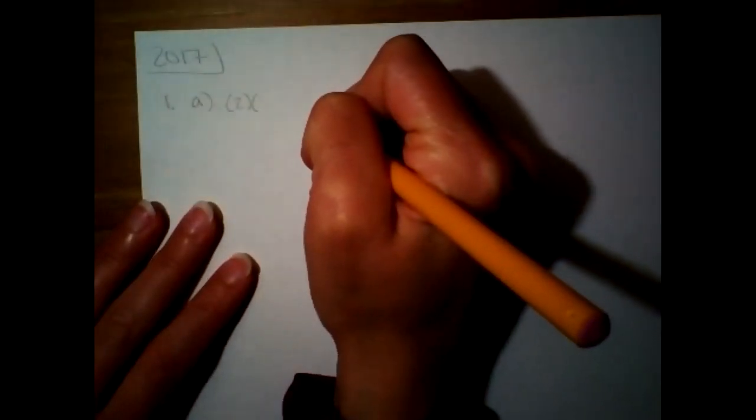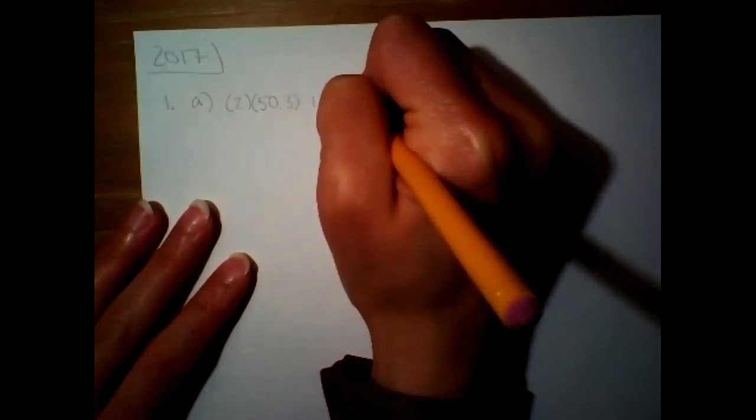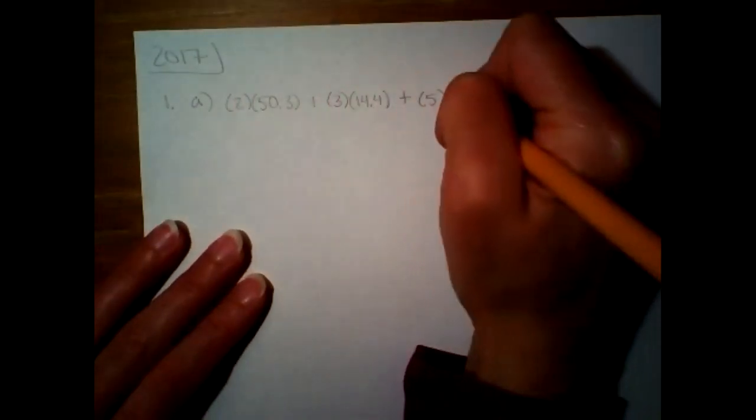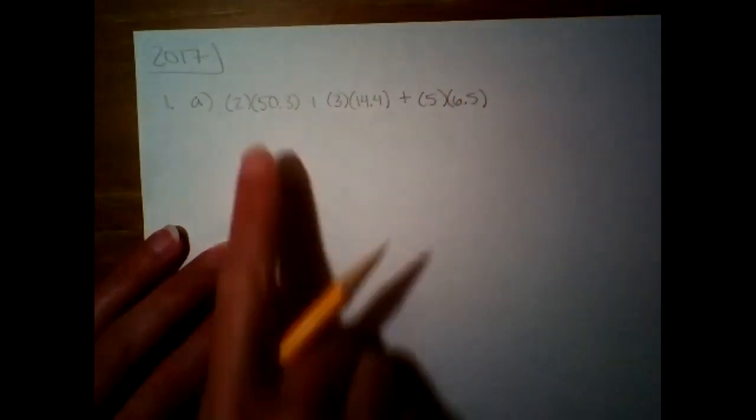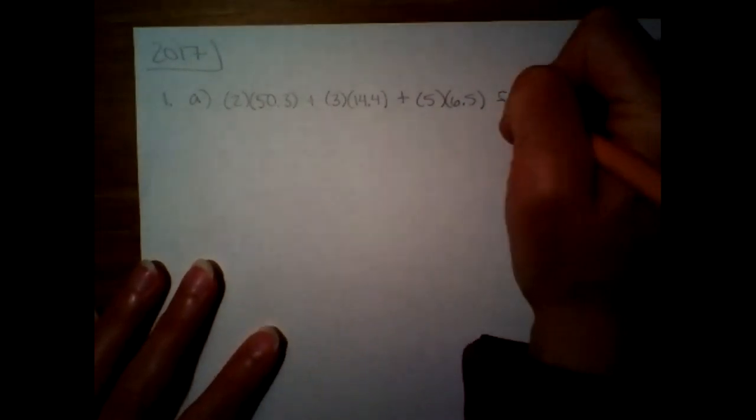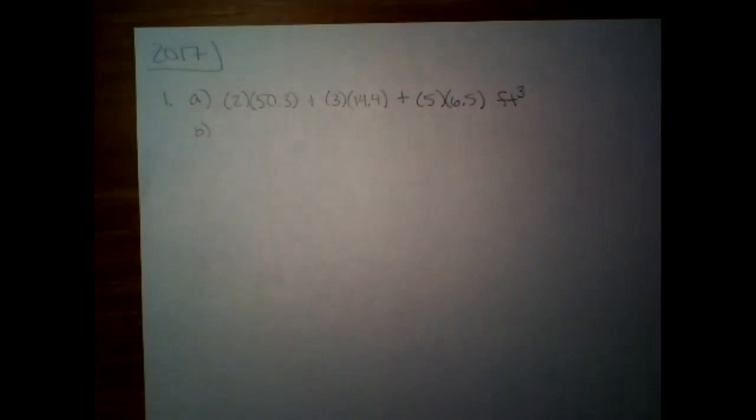So letter A says use a left Riemann sum with the three subintervals indicated by the table to approximate the volume of the tank, indicate units of measure. The first subinterval is 0 to 2, so that's the length of 2. And it said a left Riemann sum, so the number on the left is 50.3. And then the next subinterval is from 2 to 5, so that's 3. And the number on the left is 14.4. And then the third one is from 5 to 10, so that's 5. And the number on the left is 6.5. You don't have to evaluate that. Just leave it as it is. But it did say put units, and we are finding the volume of the tank.